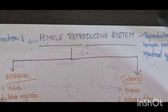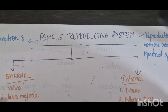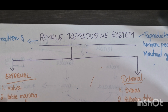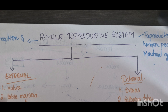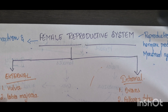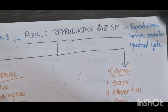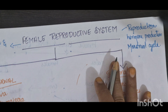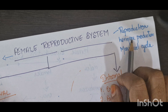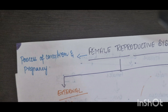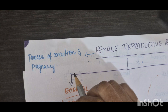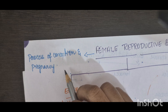Hi everyone, today we are going to discuss the female reproductive system. It is a complex network of organs and structures responsible for reproduction, hormone production, and the menstrual cycle. It helps in the process of conception and pregnancy.